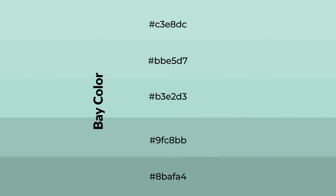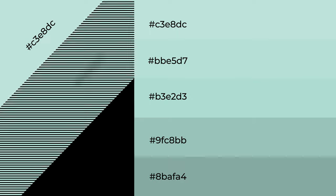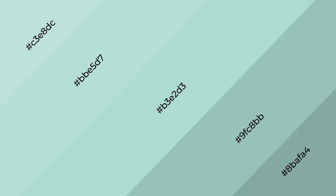To generate shades of a color, we add black to the color and it is used in patterns. 3D effects, layers and shades create depth and drama.